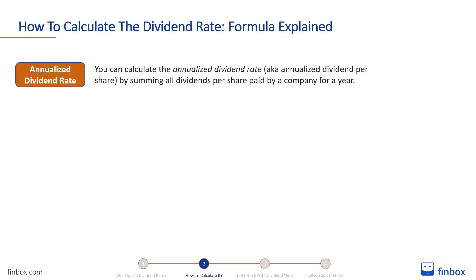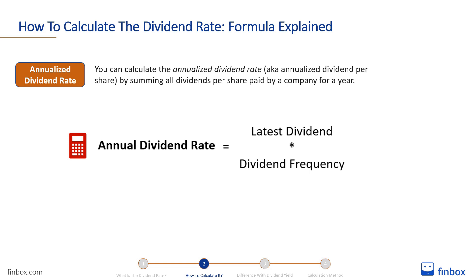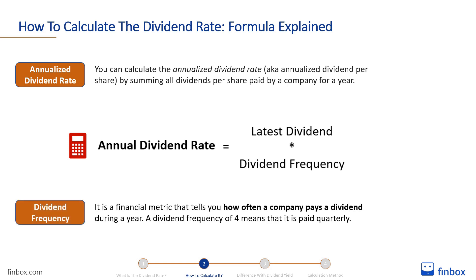You can calculate the annualized dividend rate, also known as annualized dividend per share, by summing all dividends per share paid by a company for a year. To calculate the annualized dividend rate, multiply the latest dividend paid to shareholders by the company's dividend frequency. The dividend frequency is a financial metric that tells you how often a company pays a dividend during a year. A dividend frequency of 12 indicates that the dividend is paid monthly, while a dividend frequency of 4 means that it is paid quarterly.